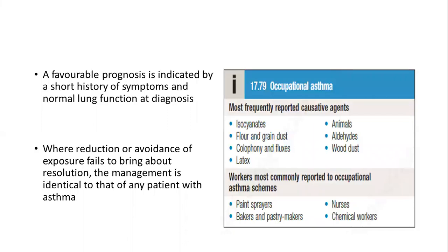For patients with occupational asthma, prognosis is favorable if the patient has a short symptom history and normal lung function at diagnosis. If we fail to identify occupational exposure and the patient cannot avoid it, there may be no resolution. We should reduce and avoid exposure. If symptoms persist after avoidance, manage as bronchial asthma. The most commonly reported causative agents include isocyanates, flour and grain dust, latex, and animals. Typical occupational groups affected include nurses, bakers and pastry makers, and chemical workers.